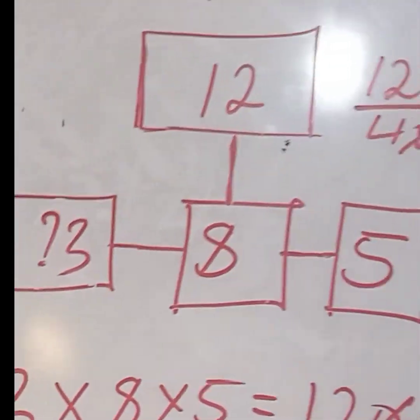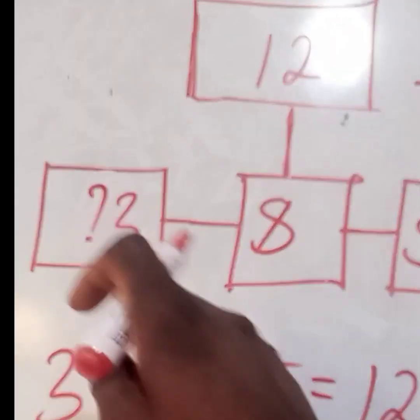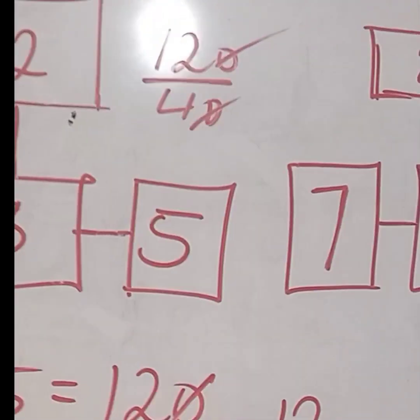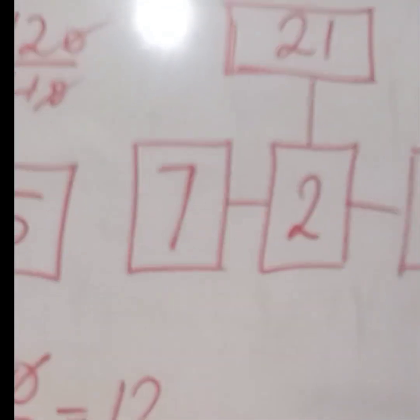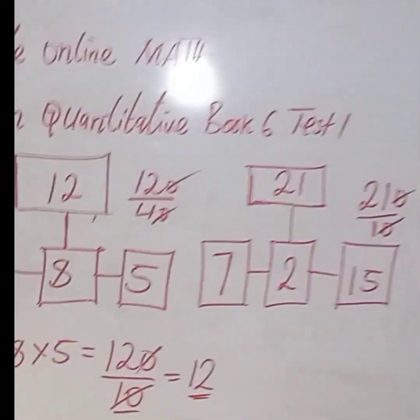If you want to get 8, you do the same thing. You do 12 times 10 divided by 3 times 5. If you want to get 2 here, you do the same thing. So this is how to solve this quantitative reasoning. It's very simple.